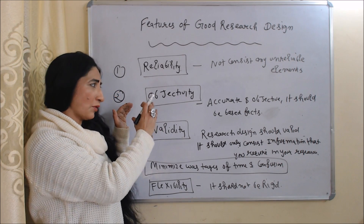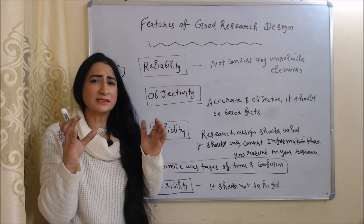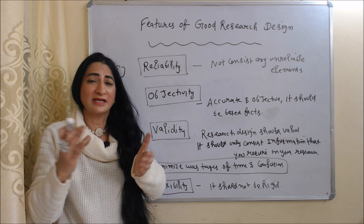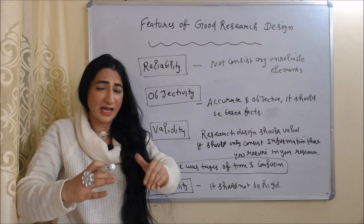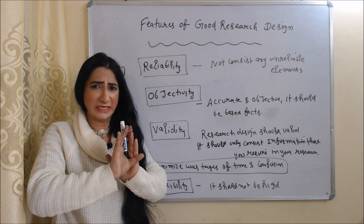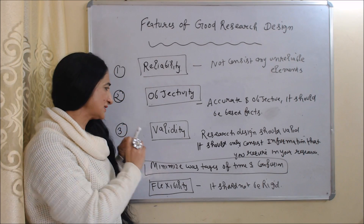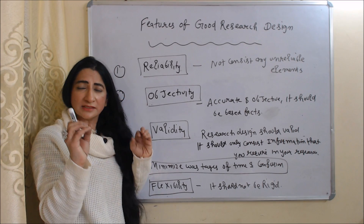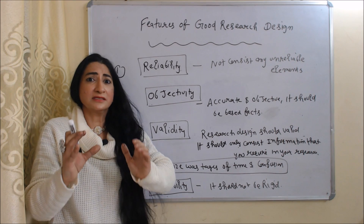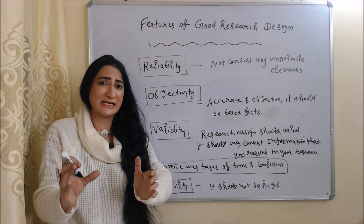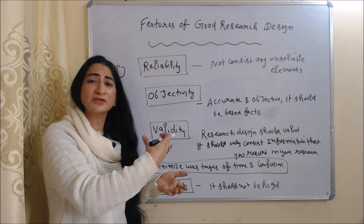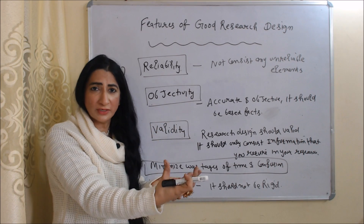Next is objectivity. Your research design should be accurate and objective, meaning it should be based on facts and not on your personal feelings. Next is validity. Your research design should be valid, meaning it should not consist of any irrelevant information — it only consists of information that you need for your research.